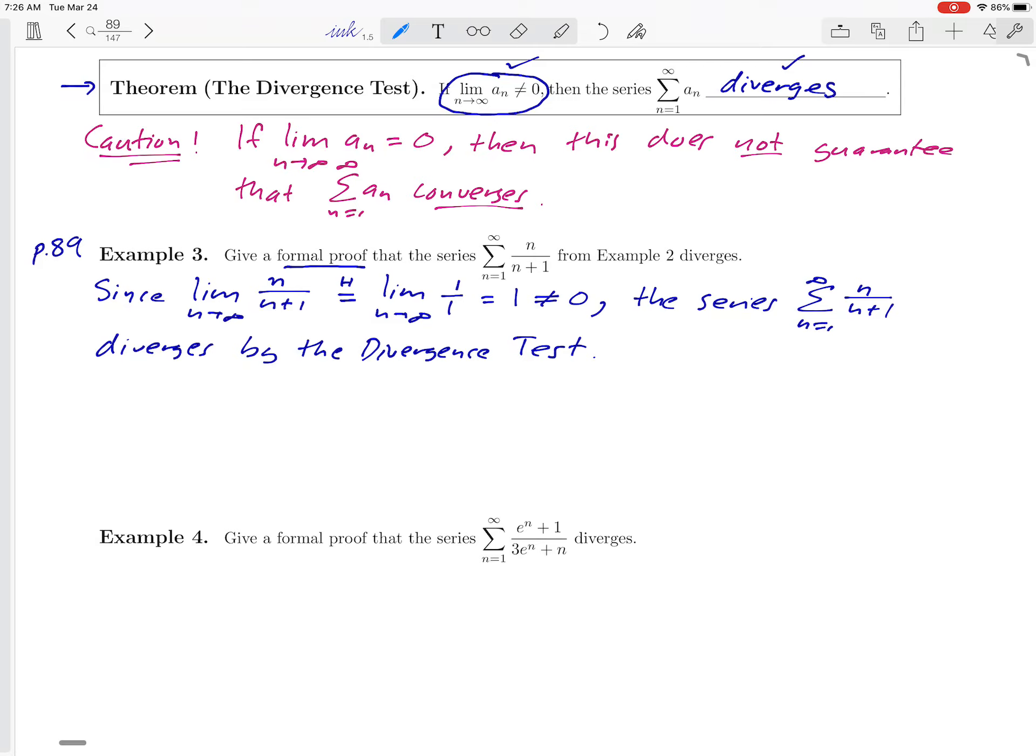So that one sentence that we just wrote is our formal proof that this series diverges. Notice that that wasn't long. We didn't have to do a lot of work. But there are some important features when you're writing a proof.